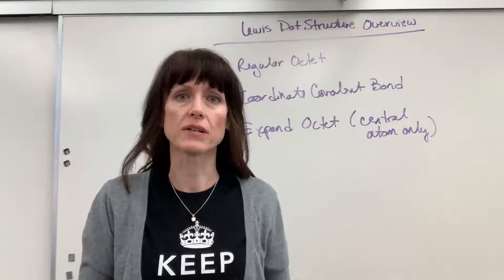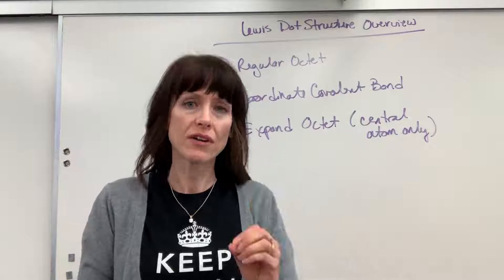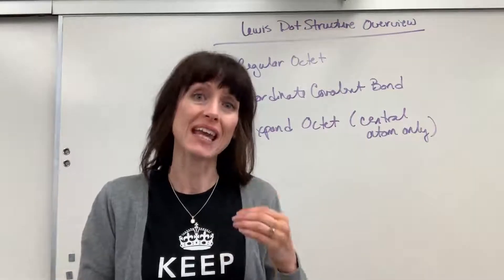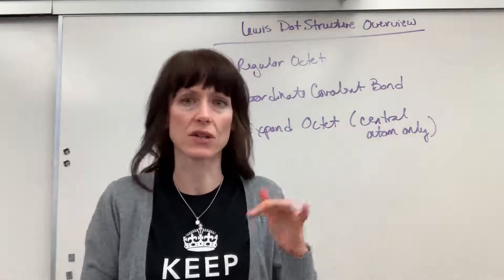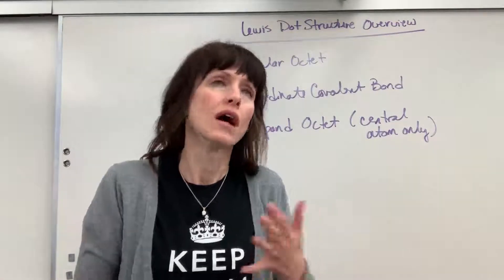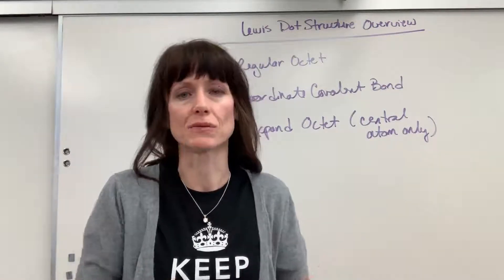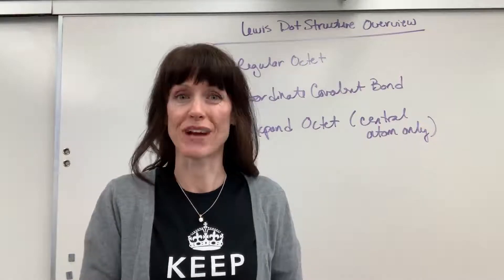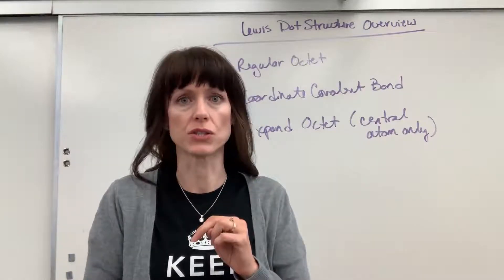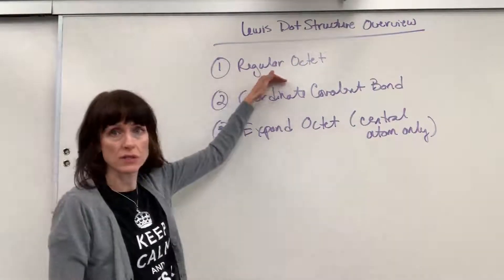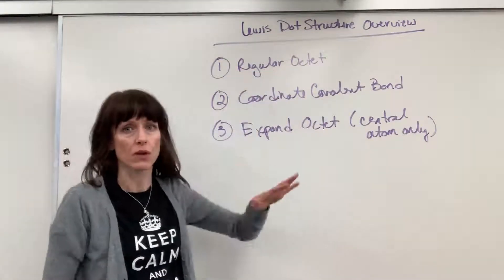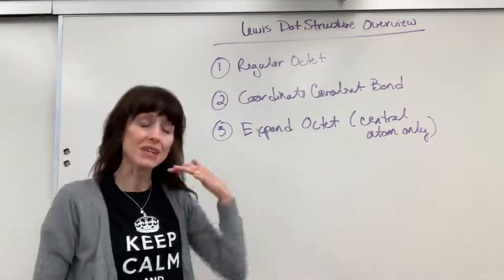That means you're sharing electrons so that every atom has eight valence electrons — eight electrons around it. Of course, with the exception of hydrogen, which only needs two. So a regular octet is always what you try first.